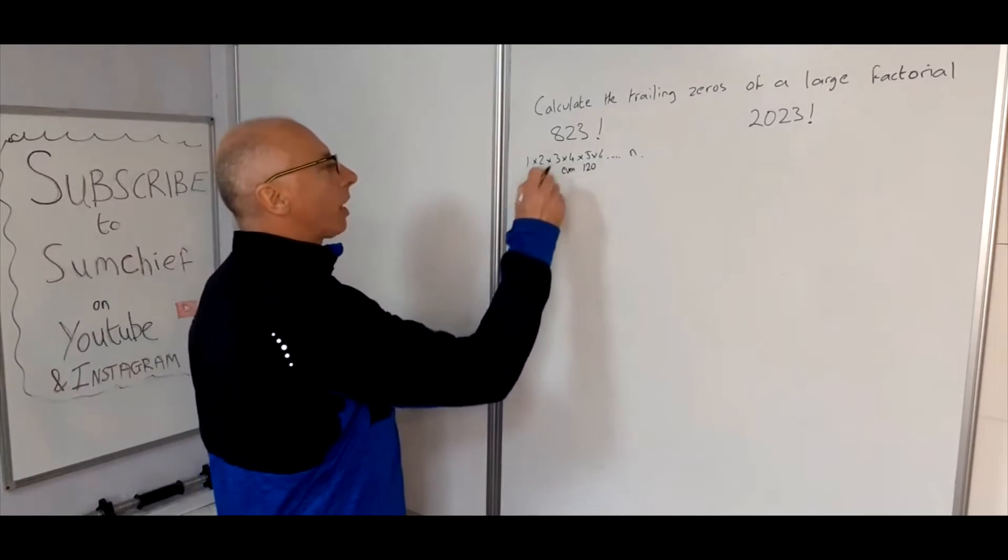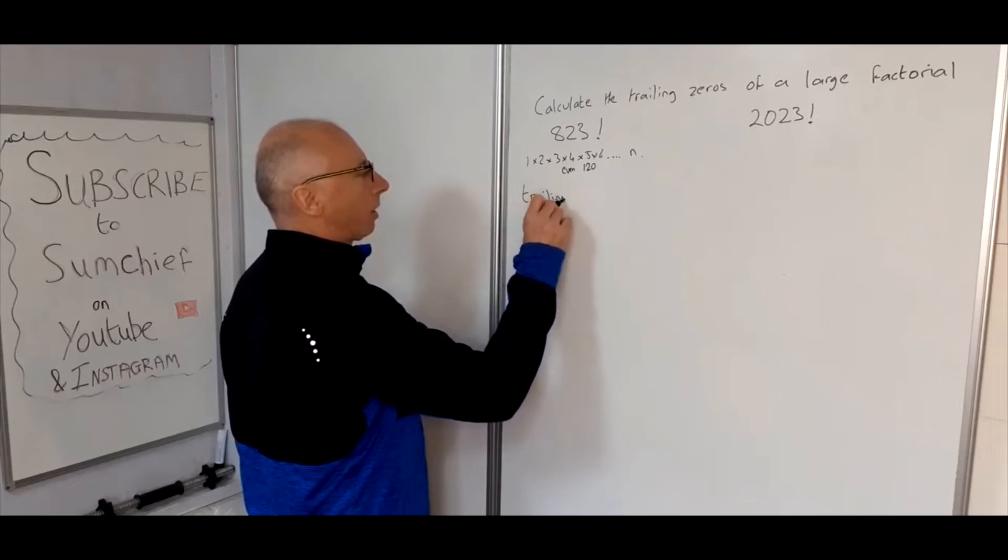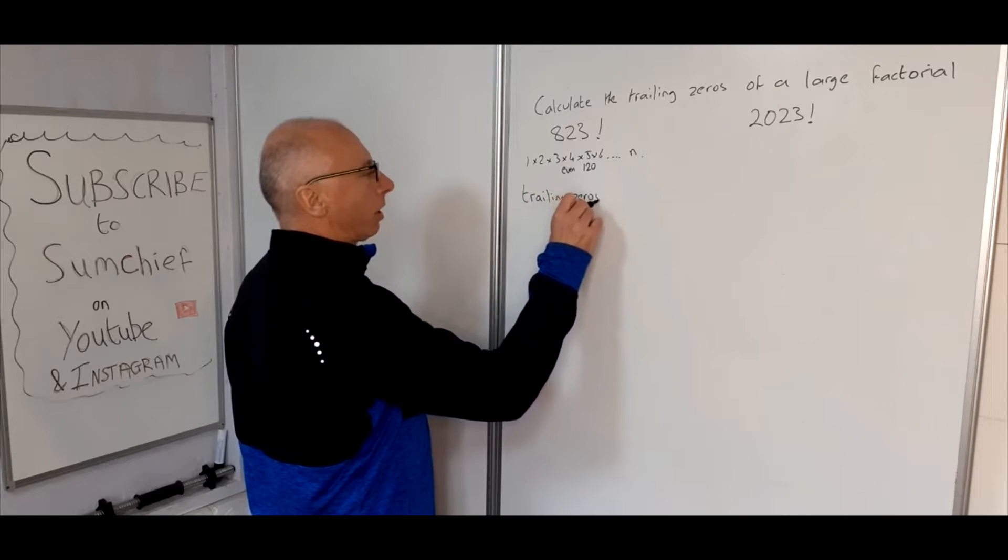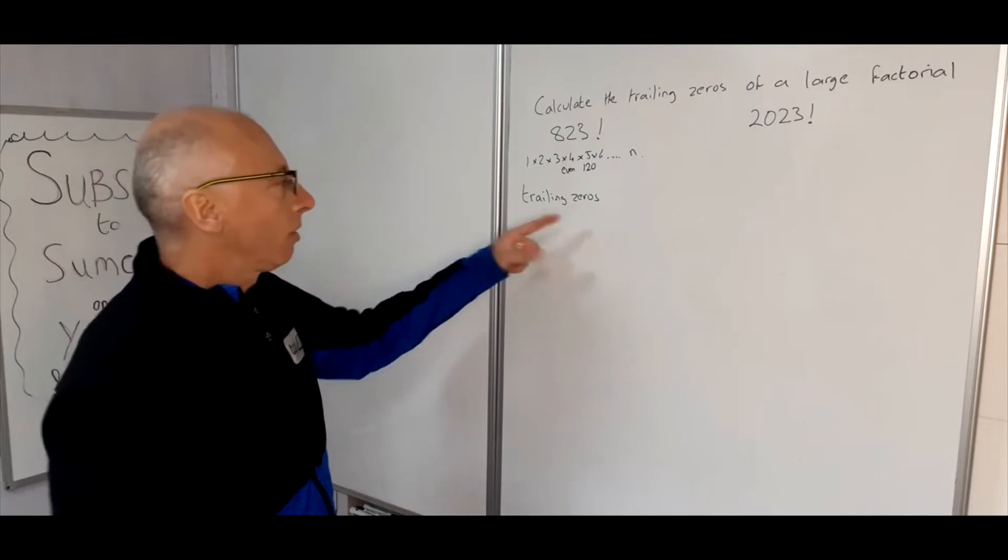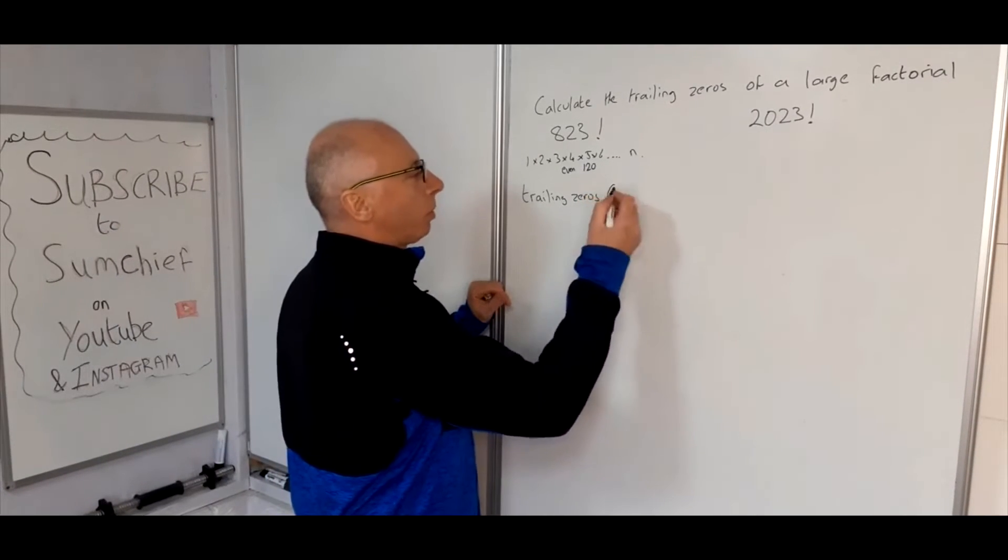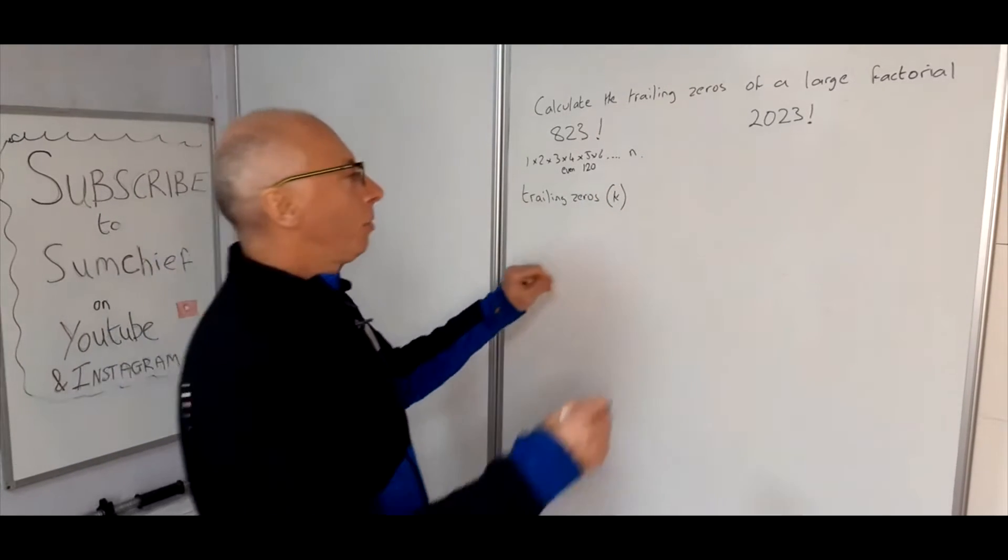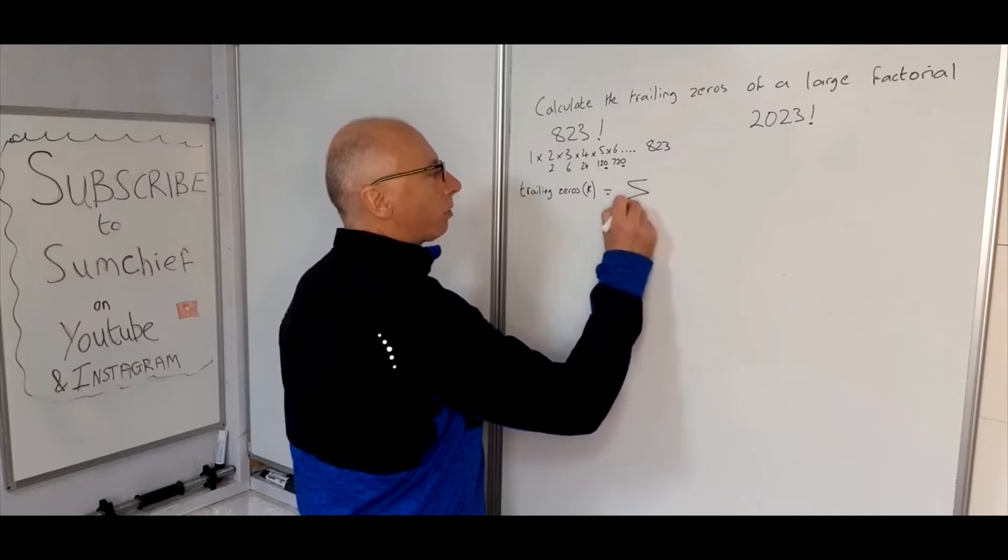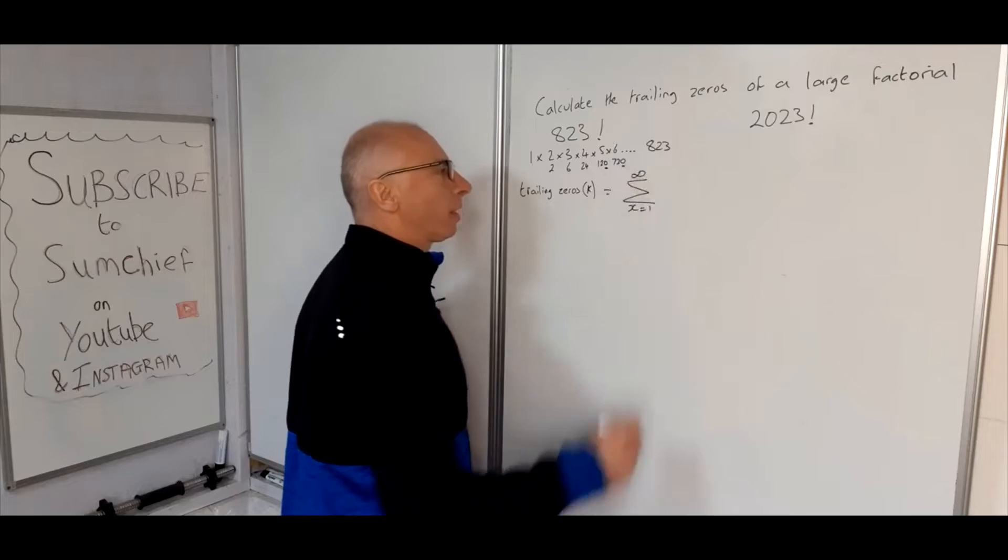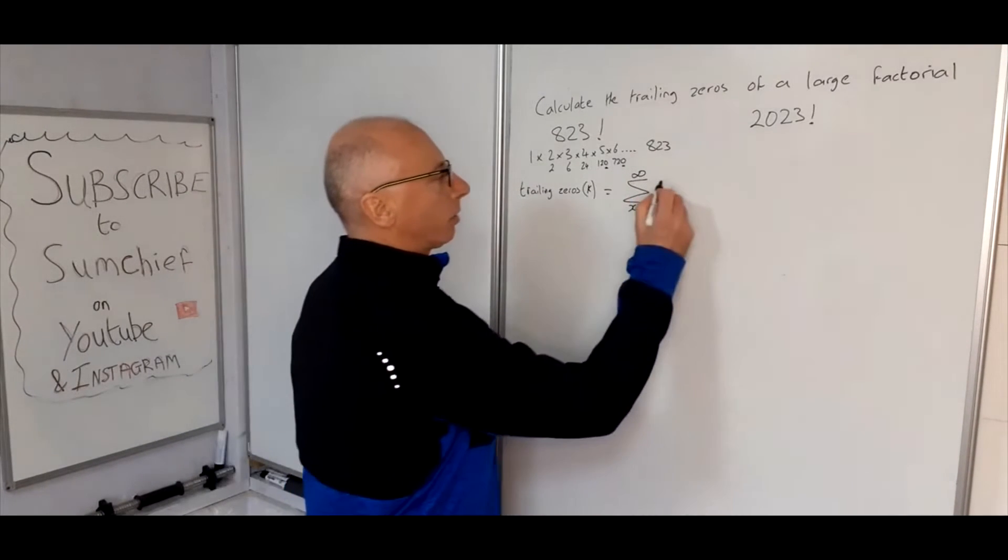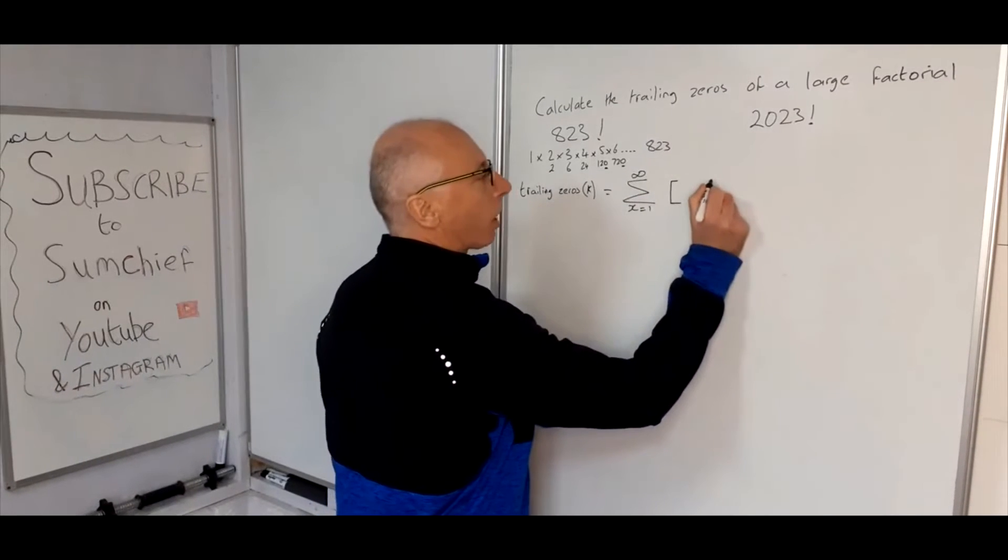I'm just going to write it like this: trailing zeros. This is just a word, it's not a number. We can give it a letter if we like, we'll call it k. Now there's a formula for it. This summation goes from x equals 1 to infinity and we're going to make use of the greatest integer function, which is open square bracket, closed square bracket.